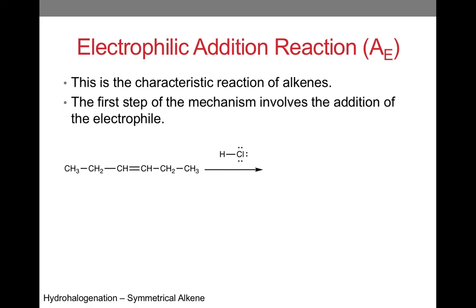Recall that a nucleophile is an electron-rich species. The alkene is electron-rich due to its double bond, while hydrogen is electron-poor, so it is the electrophile. Keeping the second rule of organic chemistry in mind, we can draw a curved arrow to show the movement of a pair of electrons. The electrons from the nucleophile move to the electrophile, which causes the bond in HCl to break. The pi bond breaks and the electrophile adds.